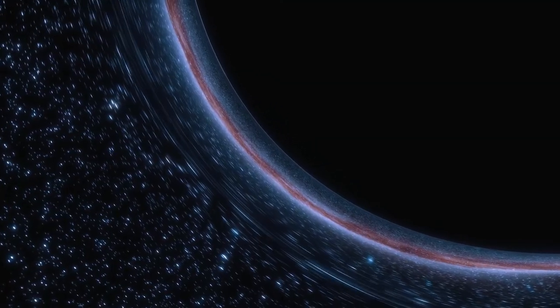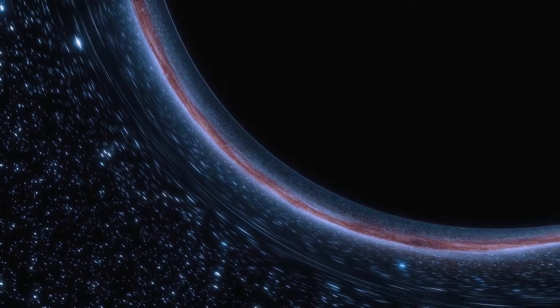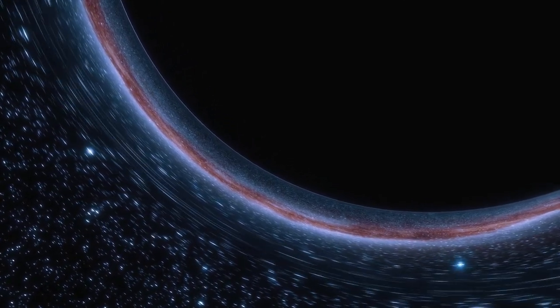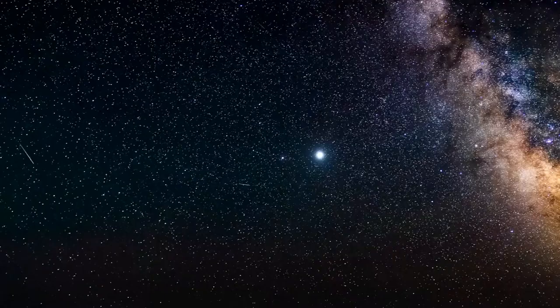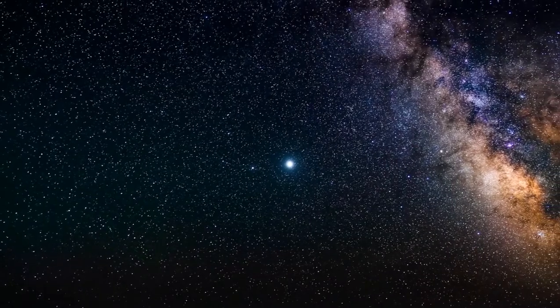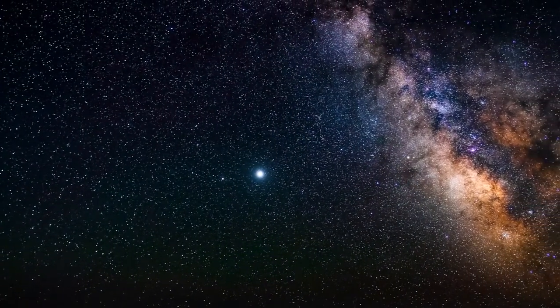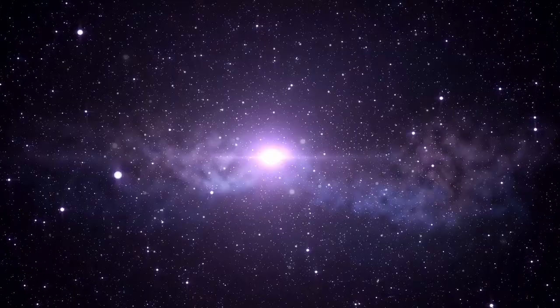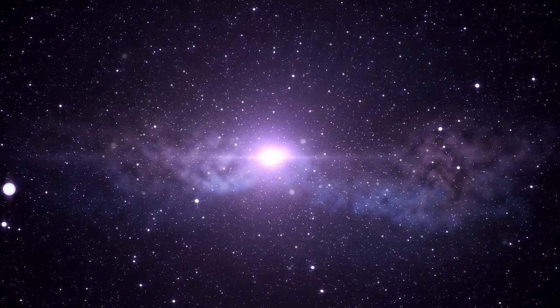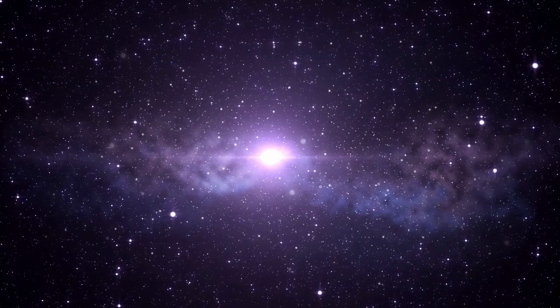However, the supermassive black holes at the centers of galaxies have millions to billions of times as much mass as our sun and give off lower frequencies of gravitational waves than those detected by LIGO. In the future, Pulsar Timing Arrays, which consists of an array of pulsing dead stars precisely monitored by radio telescopes, should be able to detect the gravitational waves from supermassive black holes of this heft.